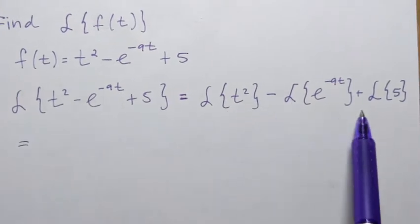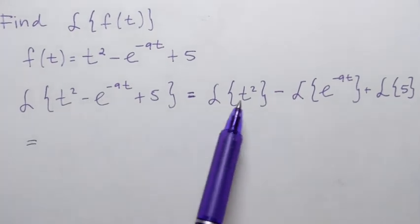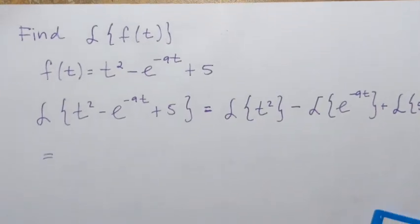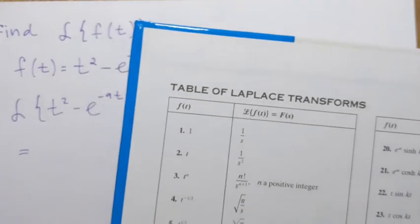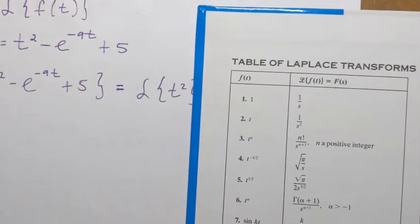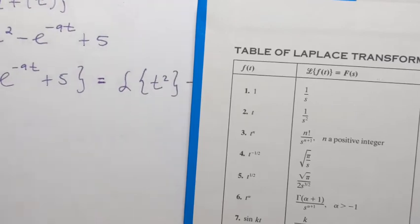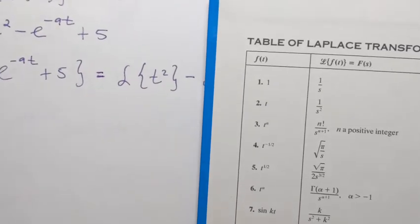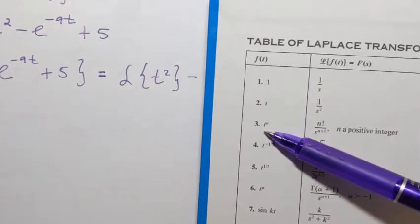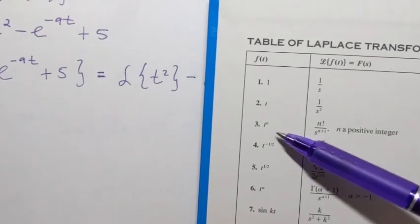Next to find Laplace transform of each, we're going to use a table of Laplace transforms. So the first one is Laplace transform of t squared. Now I have the table here, and I just need to find a function that matches this form. So how do I describe it in general? Well, it's t raised to some kind of power, right? And now as I look at the Laplace transform table, in my table it's number 3, it says t to the power n, where n is a positive integer. Well, it is a positive integer, right? 2.